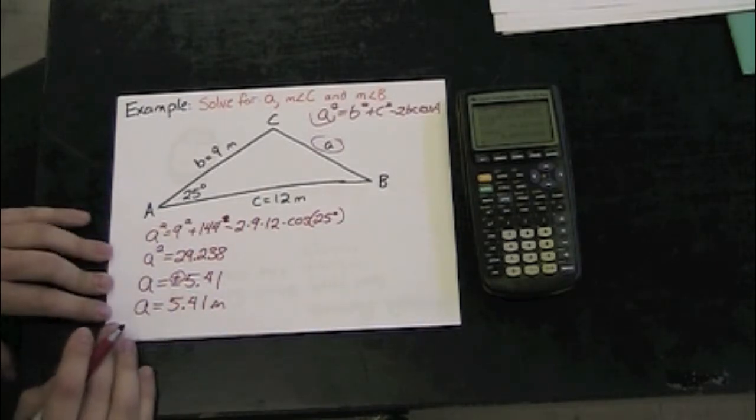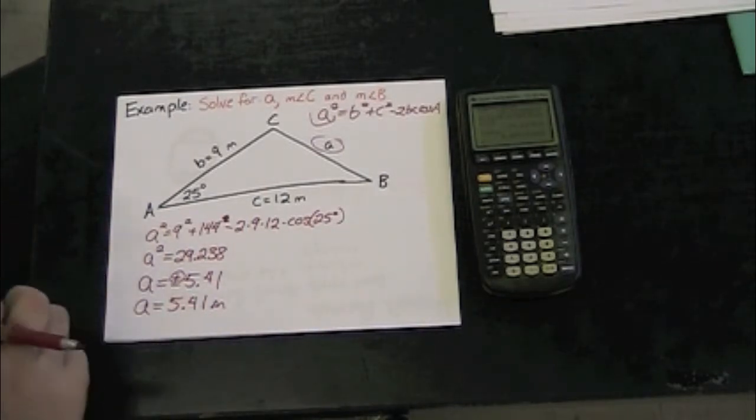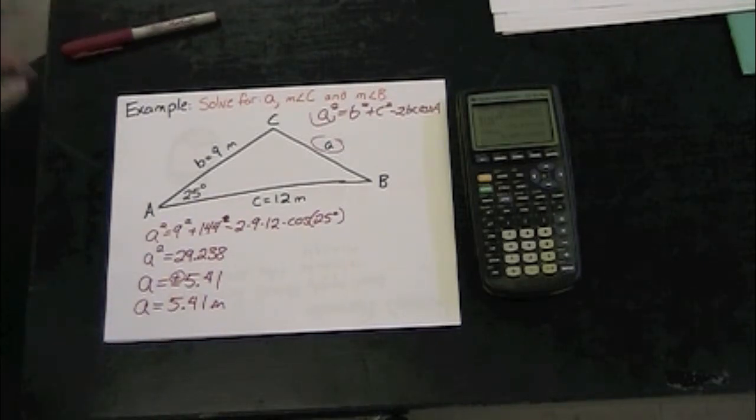Just like we did on the last example, try to solve for angles B and C using the law of cosines. See if you can get all three angles to add up to 180 degrees.